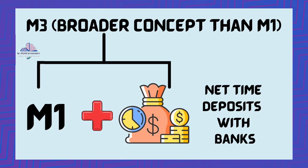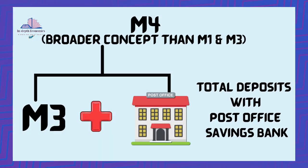The third measure of money supply is M3, which is a broader concept compared to M1. It includes M1 plus net time deposits with banks. Time deposits are those deposits that have a date of maturity, and money in time deposits must be held for the fixed term to receive the interest in full.